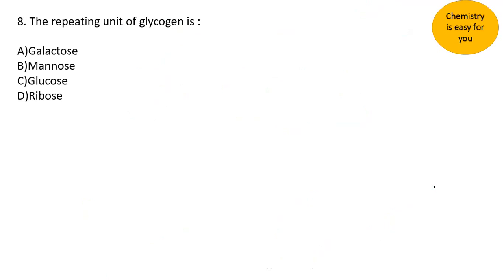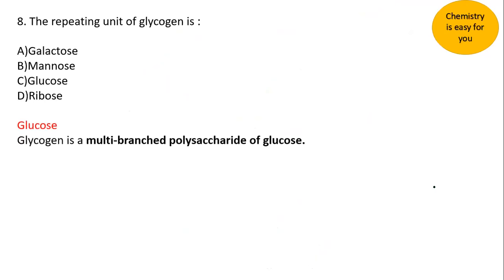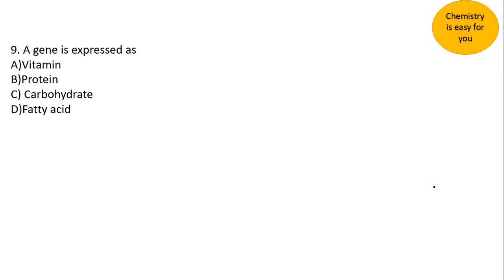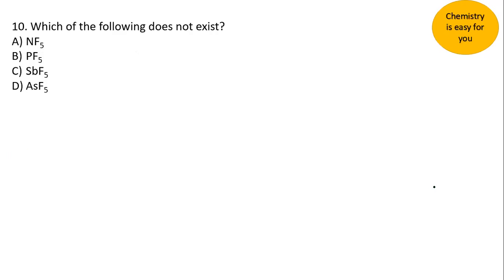The eighth question: the repeating unit of glycogen. Glycogen is a multi-branched polysaccharide, and the answer is glucose. Monosaccharides join together to form polysaccharides, and glycogen is one such polysaccharide with multiple branches. Please watch the memory hacks video on biomolecules — I'll provide the link in the description box below. The ninth question: a gene is expressed as — the answer is protein. Genes are expressed as proteins in our body, not as fatty acids, carbohydrates, or vitamins.